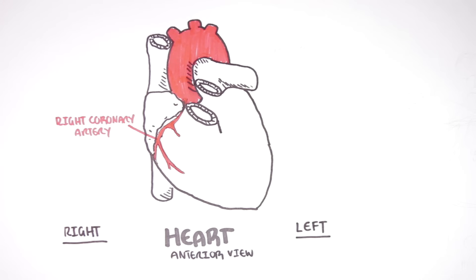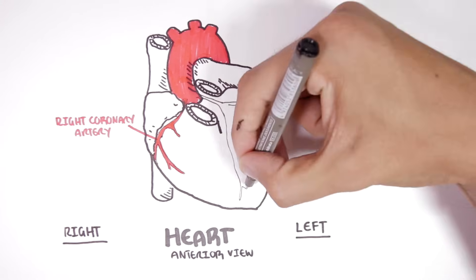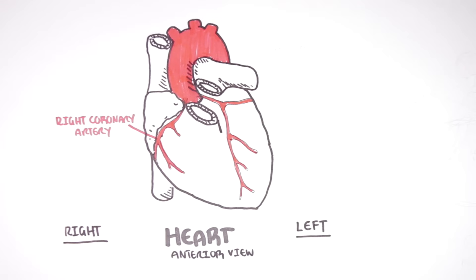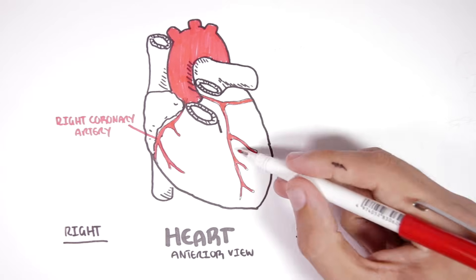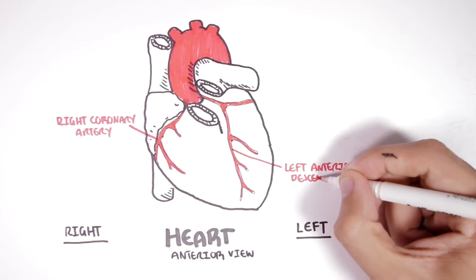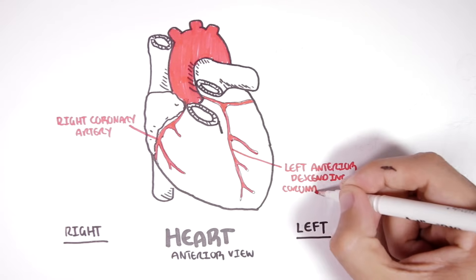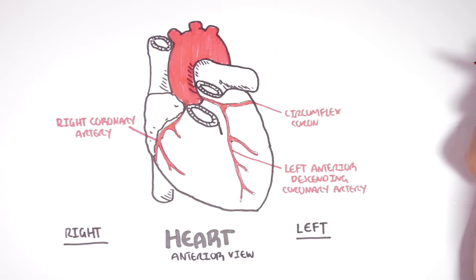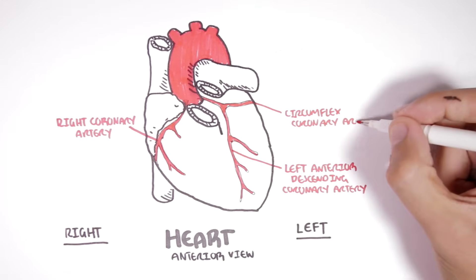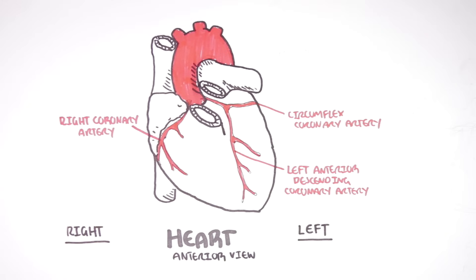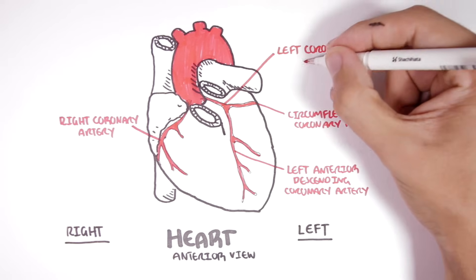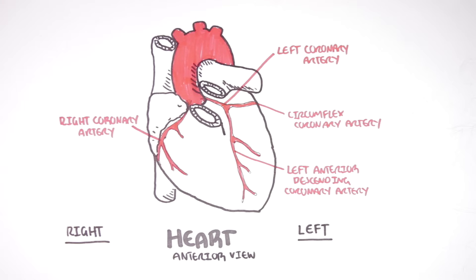We also have the left coronary artery that will divide into the left anterior descending artery and the circumflex artery. These arteries will supply blood to the left atrium and the left ventricle.